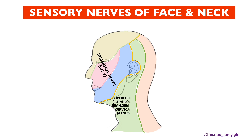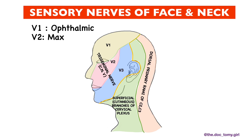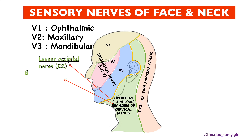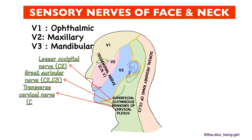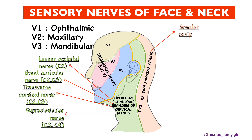The divisions of the trigeminal nerve supplying the face are: the ophthalmic division, the maxillary division, and the mandibular division. The superficial branches of the cervical plexus supplying the face are the lesser occipital nerve, greater auricular nerve, transverse cervical nerve, and supraclavicular nerve. The branches of the dorsal primary rami of C2 and C3 supplying the face are the greater occipital nerve and the third occipital nerve.